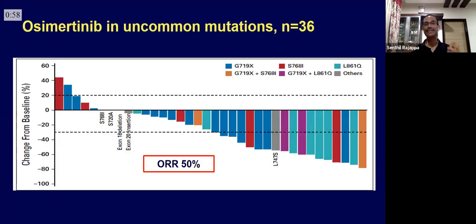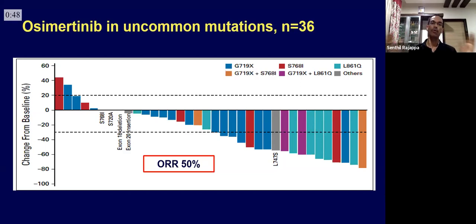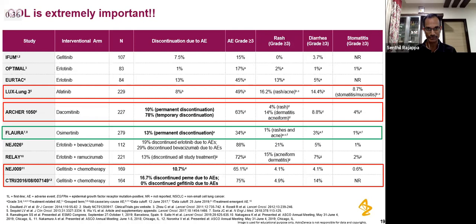There is recent data on uncommon mutations with osimertinib as well. This small dataset with 36 patients clearly shows that osimertinib also works in this group — the overall response rate is around 50 percent, which is not very different from what you get with afatinib in uncommon mutations.